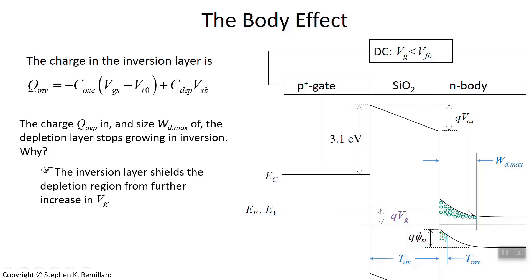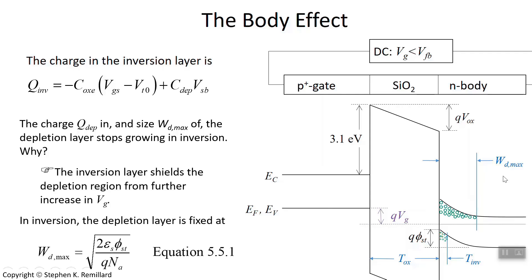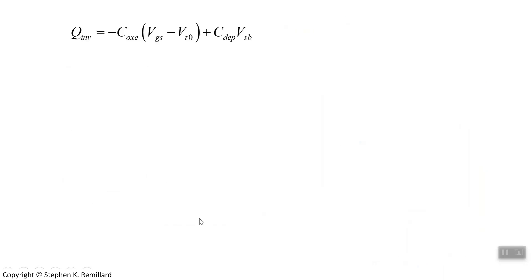Back in Chapter 5, we worked out what W_d_max is — refer back to Equation 5.51. φ_st is the surface potential at the moment you reach threshold, N_a is the doping density, and ε_s is the permittivity of the semiconductor, silicon presumably. Note that ε_s is the same symbol used for electric field, but it's traditionally epsilon for permittivity. So there's our expression for the maximum depletion width.